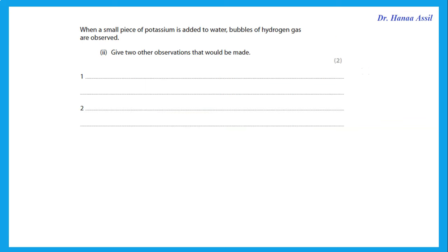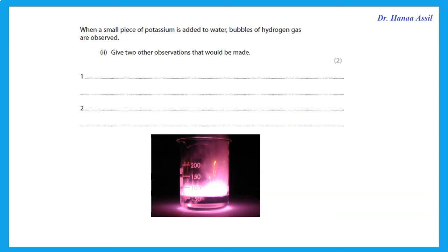Give two other observations when potassium is added to water — besides bubbles of gas. Potassium is more reactive than sodium, so potassium catches fire and gives a lilac flame. Also, group 1 metals float on the surface of water, and as the reaction proceeds, the piece of potassium solid becomes smaller — it melts or disappears.